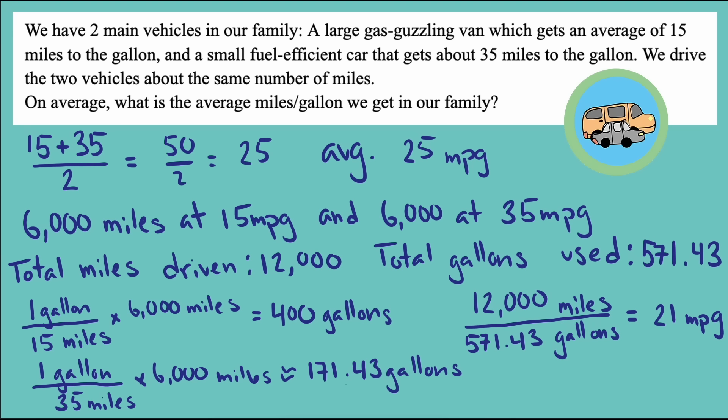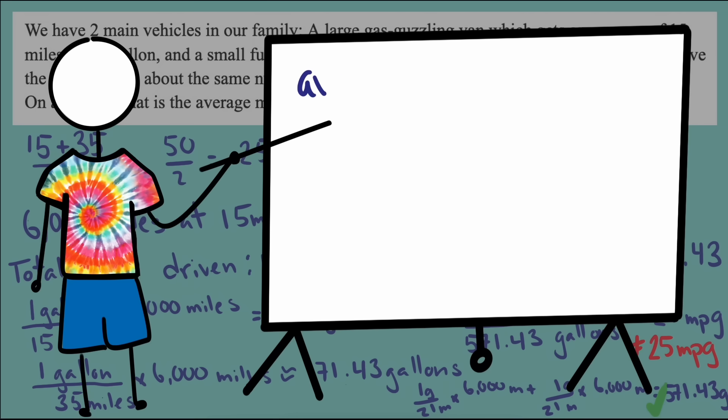And that's not the same as 25, the value we got by adding up 15 and 35 and dividing by 2. The 21 miles per gallon value is the average that I'm after in this context, because if both vehicles got 21 miles per gallon, then I would use the same amount of gas as I'm using now. So what is going on? Why doesn't the natural and easy average calculation work for these problems?